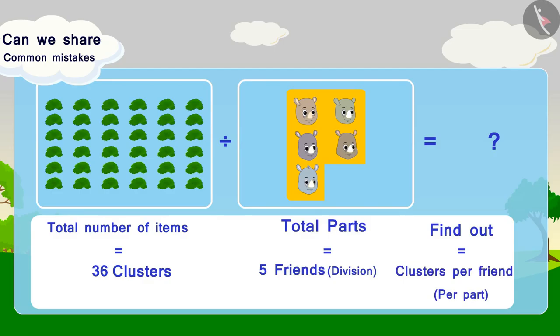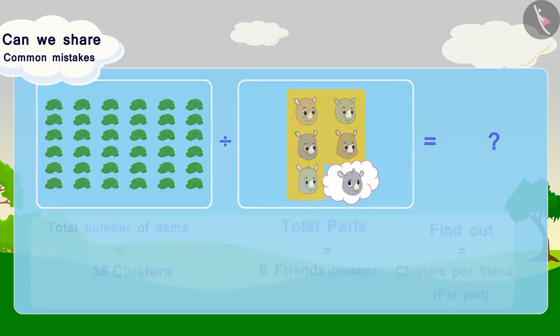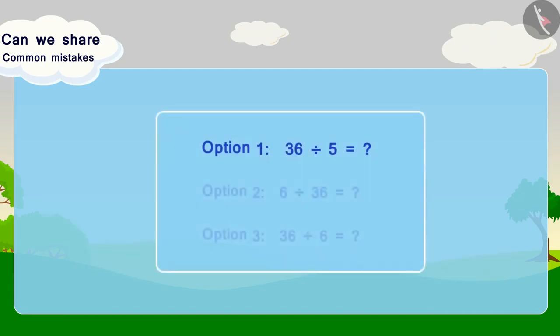But what will poor Gaggoo eat? In this option, we have not included Gaggoo while calculating the total parts. The total number of parts is wrong. For this reason, this option is incorrect.